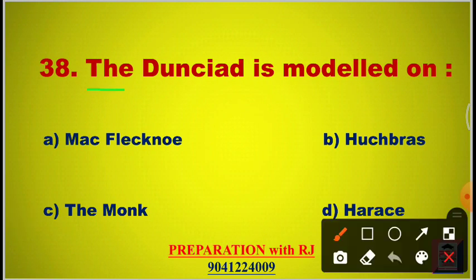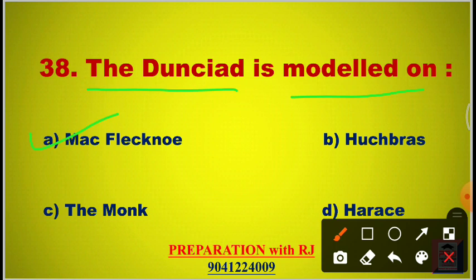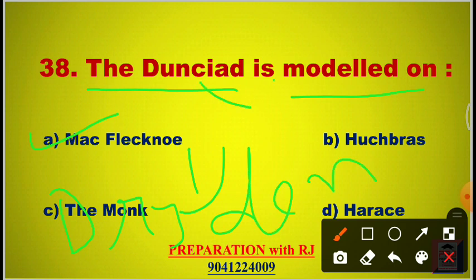Question 38: The Dunciad is modeled on — options are MacFlecknoe, Hudibras, The Monk, Harris. The answer is A, MacFlecknoe. MacFlecknoe is by Dryden, and The Dunciad is by Pope. The Dunciad is modeled on MacFlecknoe.